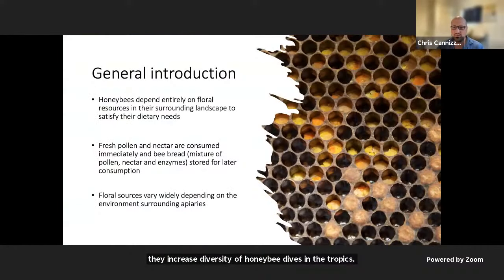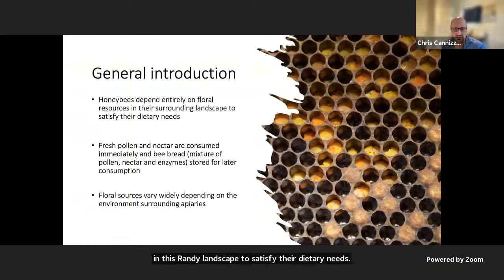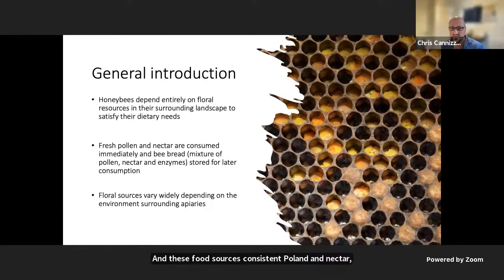I'll begin by providing a brief general introduction to honeybee diets. Honeybees depend entirely on floral resources in their surrounding landscape to satisfy their dietary needs. These food sources consist of pollen and nectar, consumed fresh directly from floral sources or collected and stored as bee bread, which is generally a mixture of fresh pollen, enzymes, and nectar for later consumption.